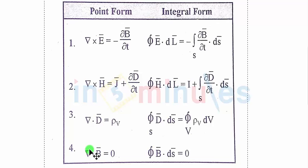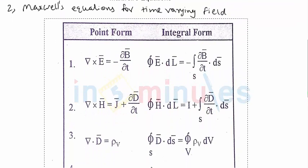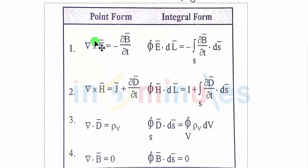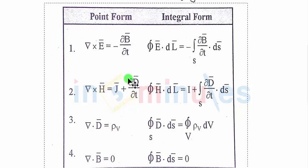Let us now go through Maxwell's equations for time-varying fields in integral form. Let us go through the various terms: E-bar is the electric field intensity, B-bar is magnetic flux density, H-bar is magnetic field intensity, D-bar is electric flux density, rho-v is volume charge density, and J-bar is conventional current density.